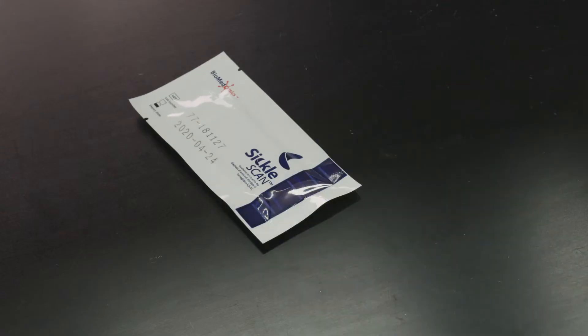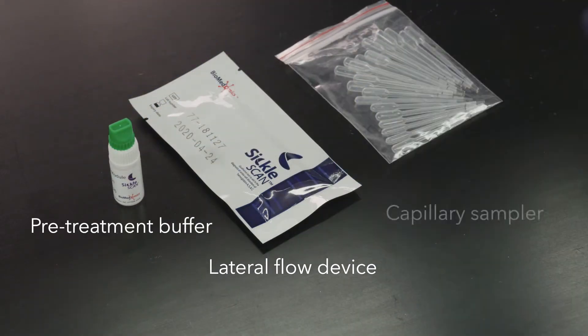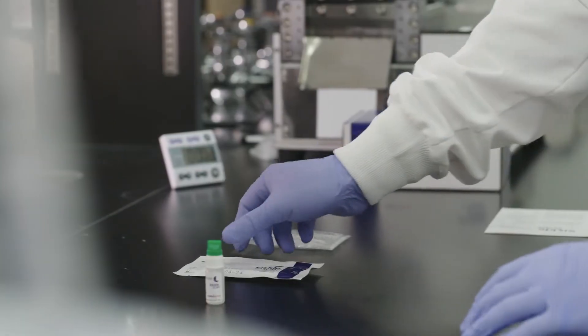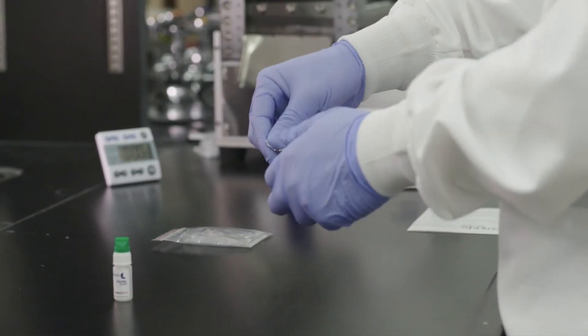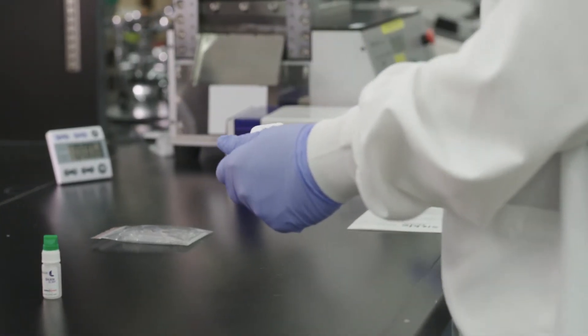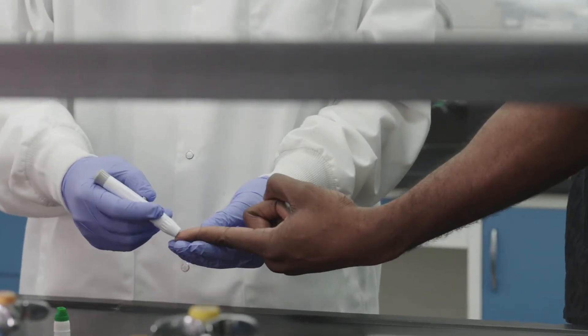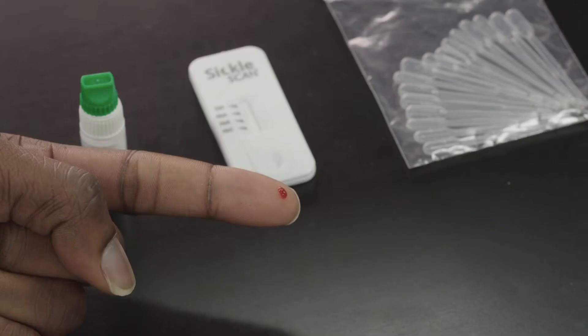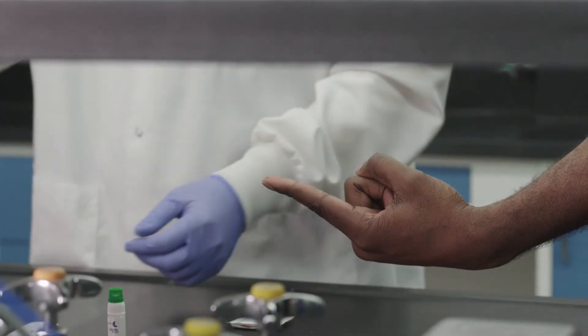The SickleScan kit includes a lateral flow device, a pre-treatment buffer, and a capillary sampler. To use, first remove the SickleScan device from its packaging and place it on a flat surface facing the user. Pink lines appearing on the test strip are normal and part of the factory quality control procedures. Acquire a finger prick, heel stick, or venipuncture sample. Lightly touch the capillary sampler to the patient's blood, filling it to the black indicator line.